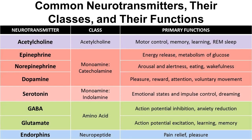Here's a table showing all the different major kinds of neurotransmitters and what they do. Acetylcholine is important for motor control, memory, learning, and rapid eye movement sleep. Epinephrine is involved in metabolism of glucose and energy release. Norepinephrine is involved in arousal, alertness, eating, and wakefulness. Dopamine is involved in pleasure and reward, attention, and voluntary movement. Serotonin is important for emotional states and impulse control. GABA is involved in action potential inhibition and anxiety reduction. Glutamate is involved in action potential excitation, learning, and memory. And there are a bunch of different kinds of endorphins, which are important for pain relief and pleasure.